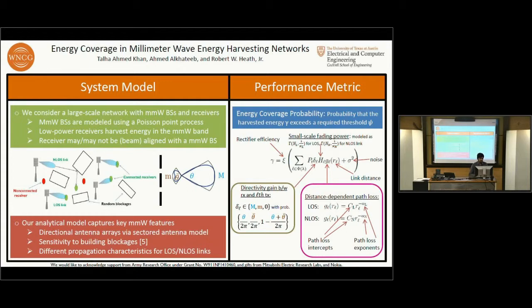This analytical model captures key features of millimeter wave, such as directional antenna arrays at the transmitter and receiver. We assume a sectored antenna model, which is shown here, where there is a main lobe gain and a side lobe gain, and corresponding beamwidths are also visible.